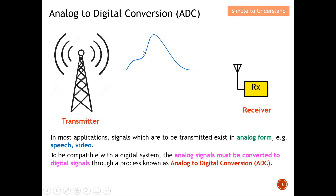The transmitter sends this analog signal, for example my voice, over to the receiver. To be compatible with a digital system, the analog signal must be converted to a digital signal through a process known as analog to digital conversion. As we move into the era of digitalization, instead of sending analog waveforms, we send digital signals, so we must convert our original analog source to digital before transmitting to the receiver.